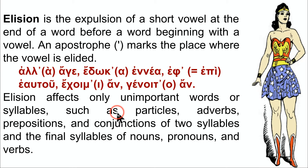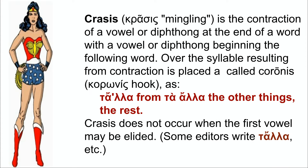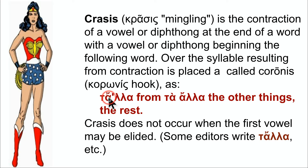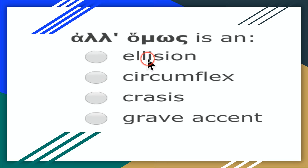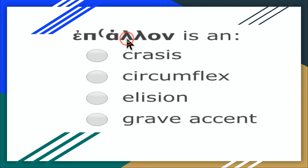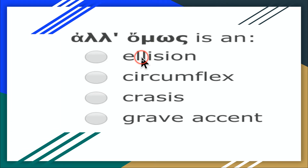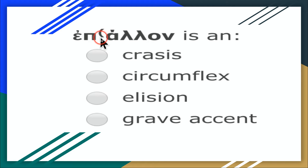Elision only occurs at the end vowel. Crasis is when you put two words together — like 'ait.' It's a contraction, and you can tell it's crasis because you will have a rough breathing in the middle of it. So 'tala' from 'taala.' For example, 'alamos' — the word begins with a vowel and ends with a vowel, so that would be elision. But if it's one word with the rough breathing in the middle of it, it's crasis.